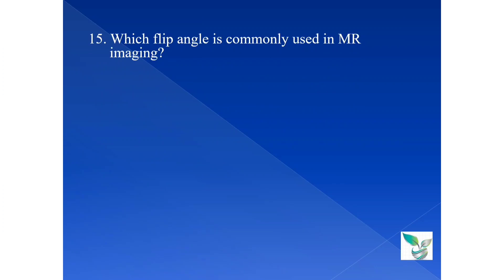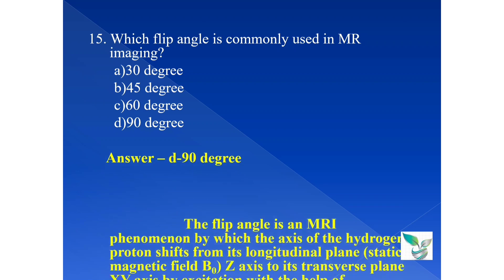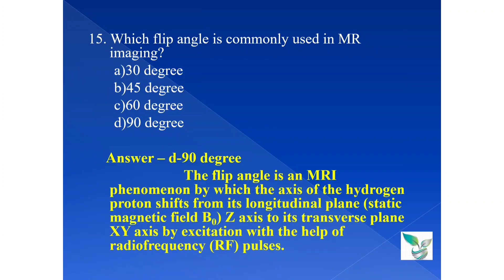Question number 15. Which flip angle is commonly used in MRI imaging? Option A 30 degree, option B 45 degree, option C 60 degree, option D 90 degree. The answer is option D 90 degree. The flip angle in MRI is the phenomena by which the axis of the hydrogen proton shifts from its longitudinal plane, that is the static magnetic field B0, to the transverse plane, the Z axis to the X axis, by excitation with the help of radio frequency RF pulse.